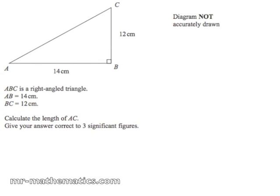We've got a right angle triangle and we need to find the length AC, so we're going to use Pythagoras' theorem.